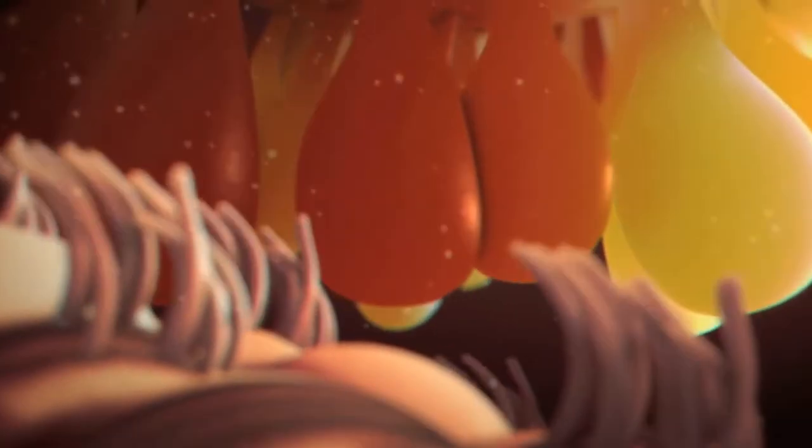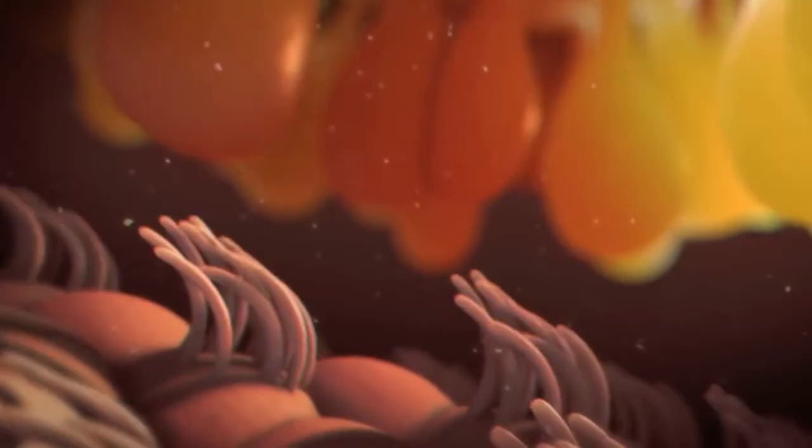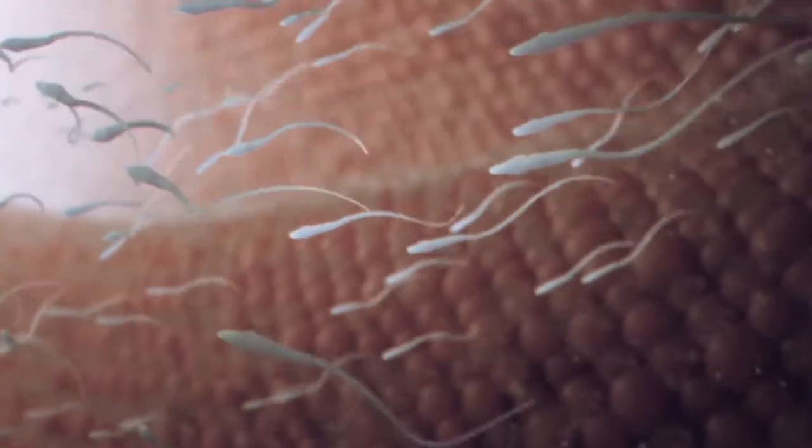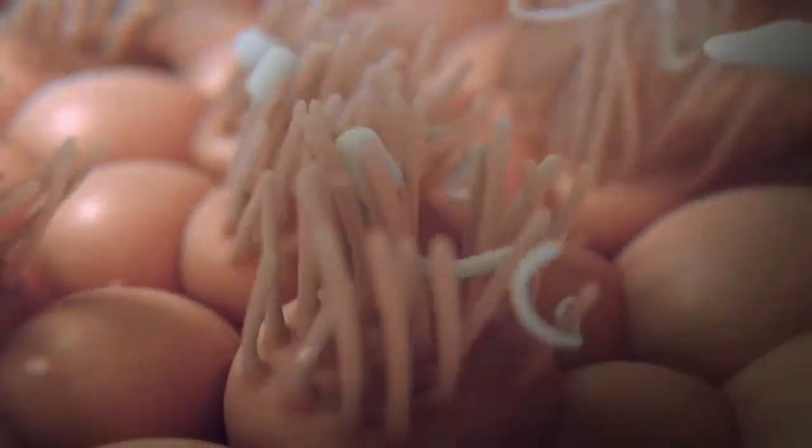Inside the fallopian tube, tiny cilia push the egg toward the uterus. To continue, the sperm must surge against this motion to reach the egg. Some sperm get trapped in the cilia and die.